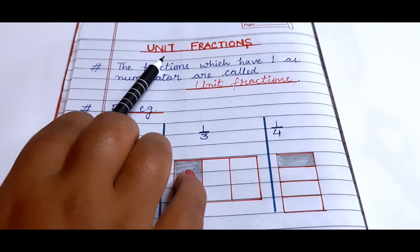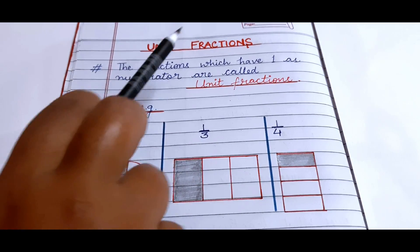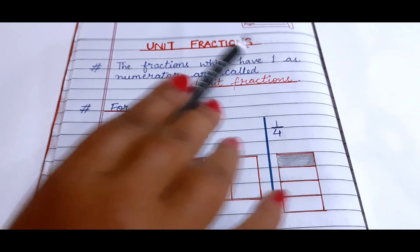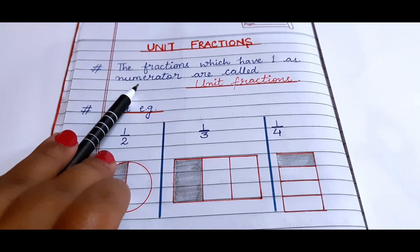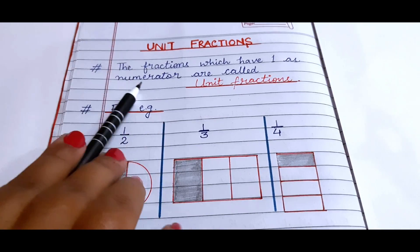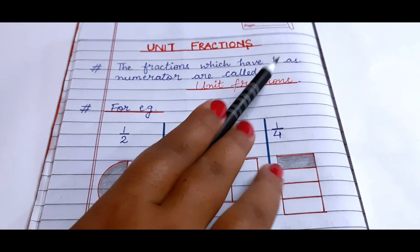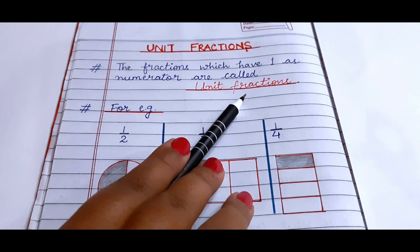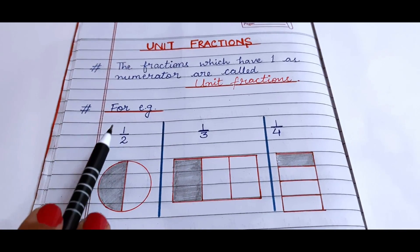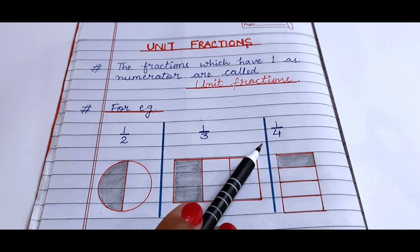As you know, unit means 1. So the fractions which have 1 as numerator — the number which is written above the fraction bar — are called unit fractions. For example, 1 by 2, 1 by 3, 1 by 4, and so on.